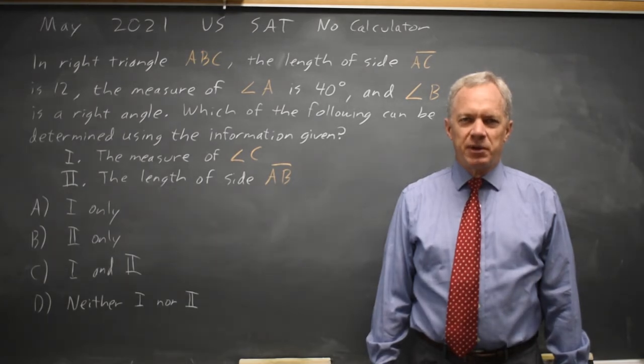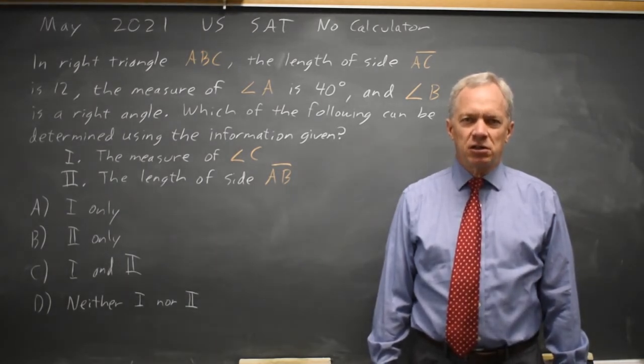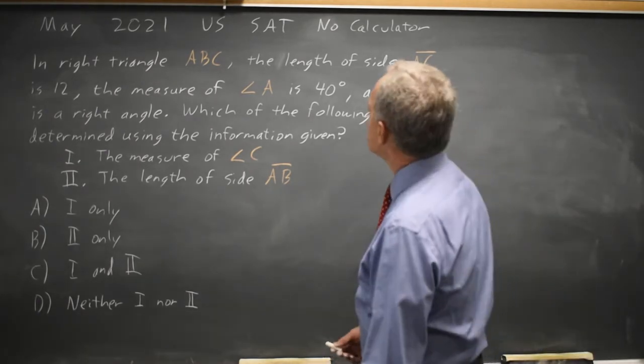I'm Dr. Roger, and this question is from the May 2021 U.S. SAT non-calculator. The College Board is asking us a geometry question about triangles. We have right triangle ABC,